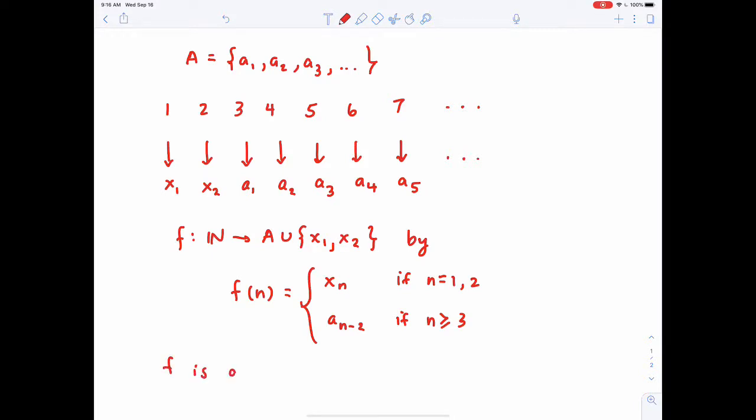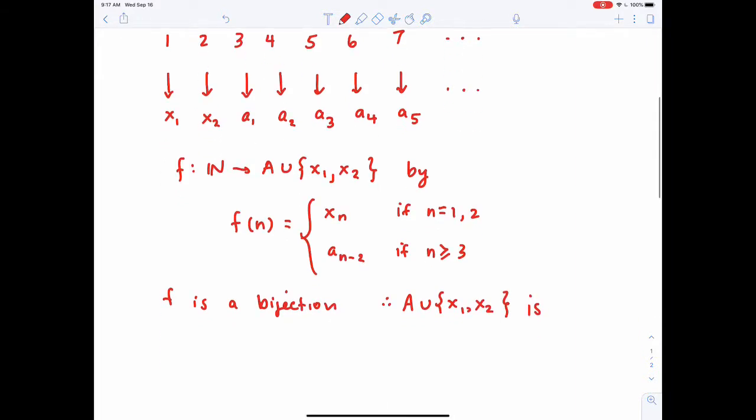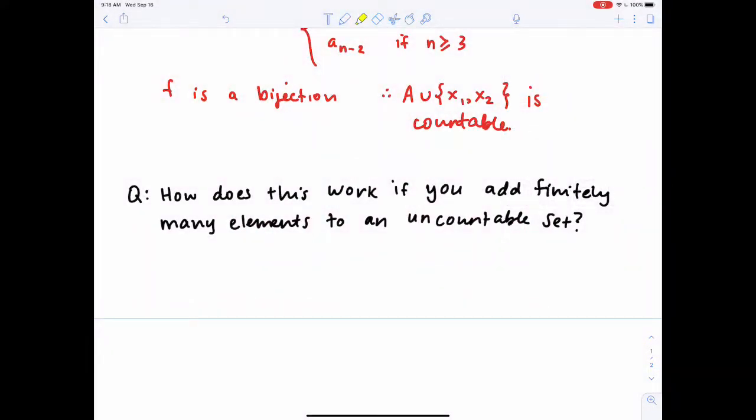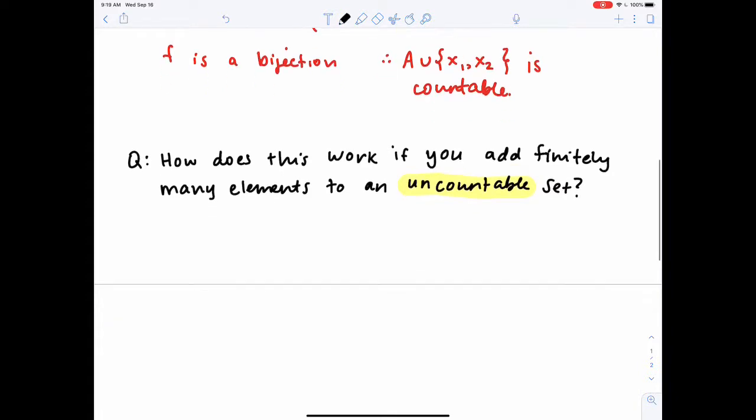So f is a bijection, therefore A union {x₁, x₂} is countable. So that was the warm-up, but now I want to answer this other question. How does this process work if you add finitely many elements to an uncountable set? We expect that when you have a set with infinitely many elements in it and you just add, say, two more numbers to it, that that shouldn't increase the cardinality of your set. It should still have the same cardinality. So what's the issue here if I am trying to add to an uncountable set? Why is this problem harder than the one that we just did?